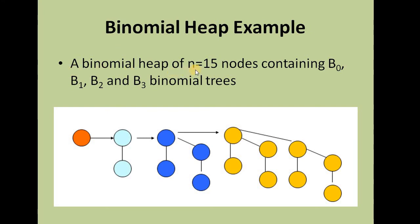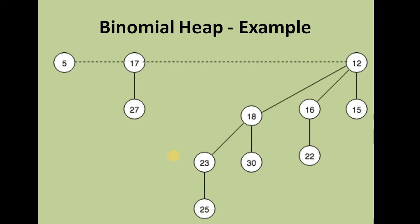Here is a binomial heap of 15 nodes, containing B0, B1, B2, and B3. All properties are satisfied: different-sized binomial trees are present, and all roots are connected in increasing order. In this example with key values, B0, B1, and B3 are shown. The root of B3 is connected to the root of B1, which is connected to the root of B0.